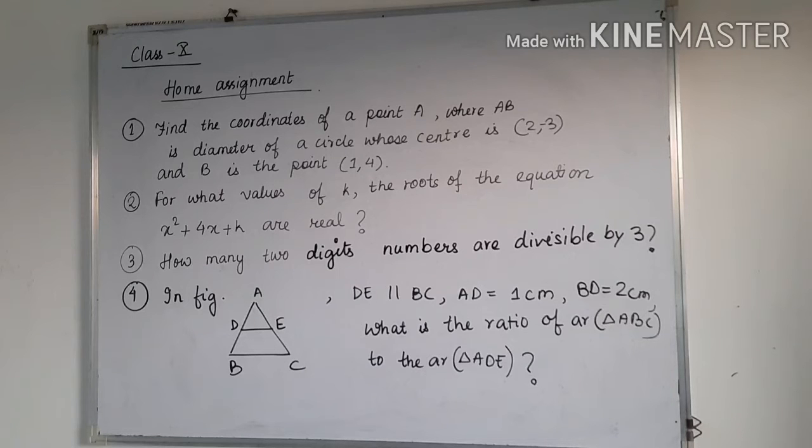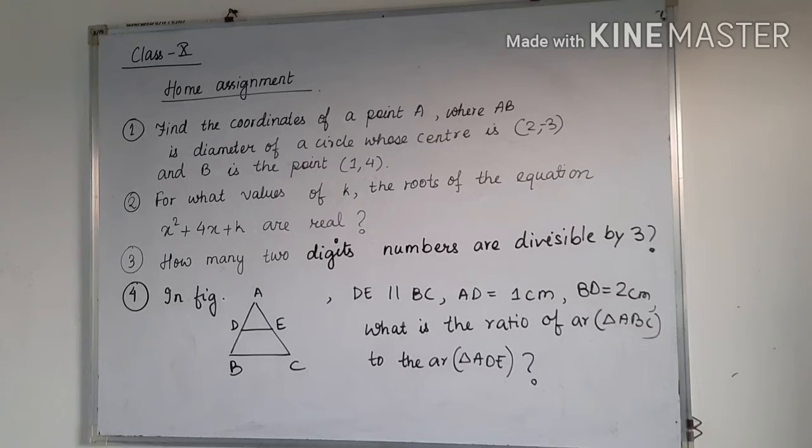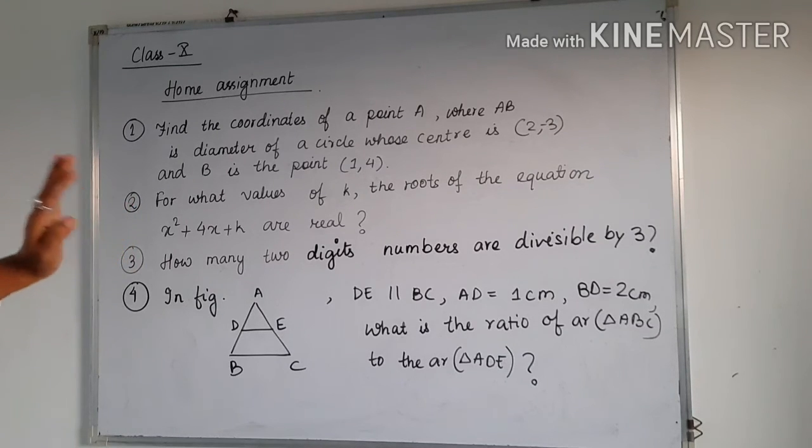Next is question number 2. For what value of K, the roots of the equation x² + 4x + K are real? So you know that we have to find the value of the discriminant. If they are real, then there was a condition. The value of discriminant lies in a range. So just check it. The quadratic equation is having real roots if what happened to the discriminant, you have to just check.